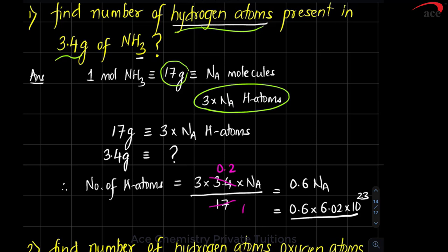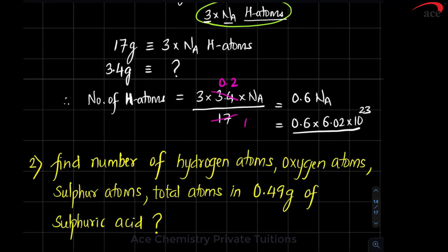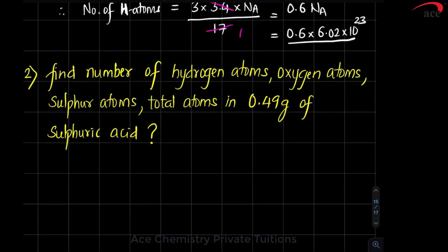To summarize what we did: we wrote one mole of ammonia as 17 grams with NA molecules, but since we are interested in hydrogen atoms, we multiplied atomicity of hydrogen by NA. So 17 grams corresponds to 3 × NA hydrogen atoms, and 3.4 grams corresponds to how much — cross-multiply to get the number of hydrogen atoms.